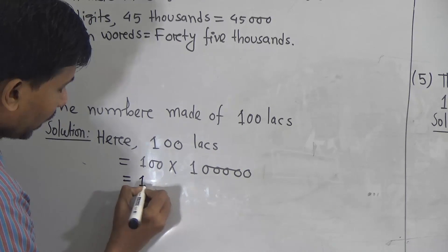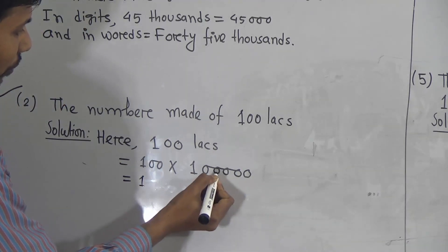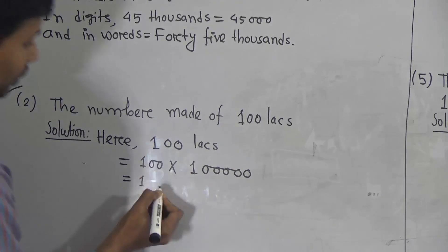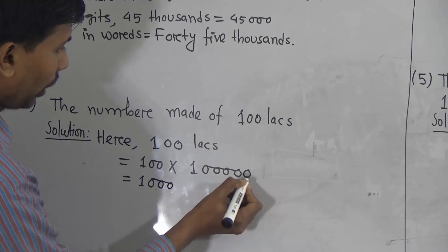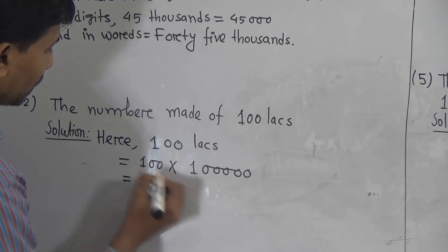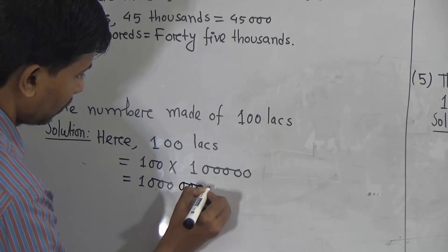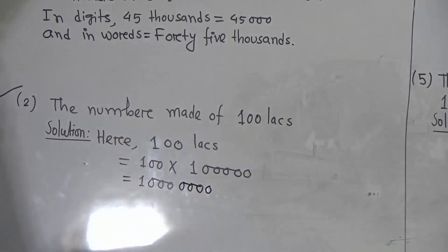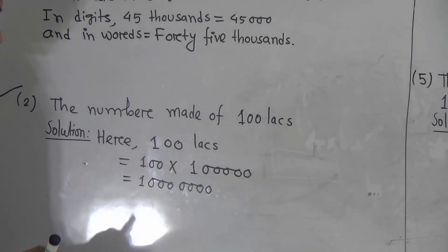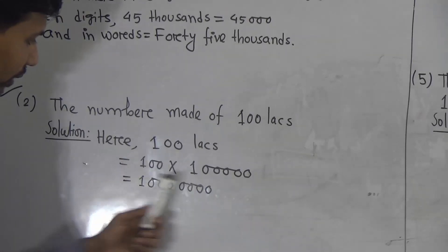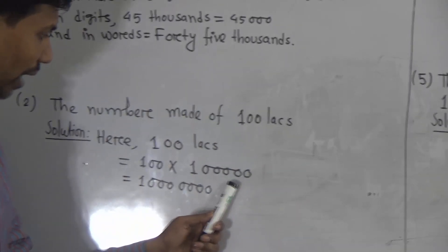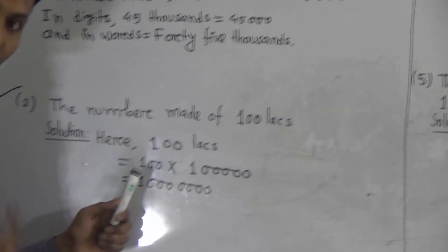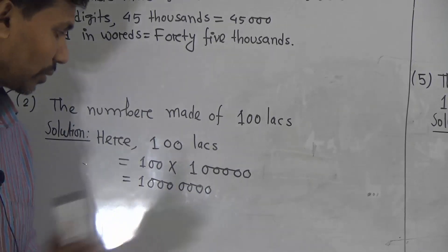Count the zeros: 1, 2, 3, 4, 5, 6, 7. So 1 with how many zeros? You count: there are 5 and 2, that means 7 zeros — put 7 zeros. Now write the number made of 100 longs equal to 1 with 7 zeros.